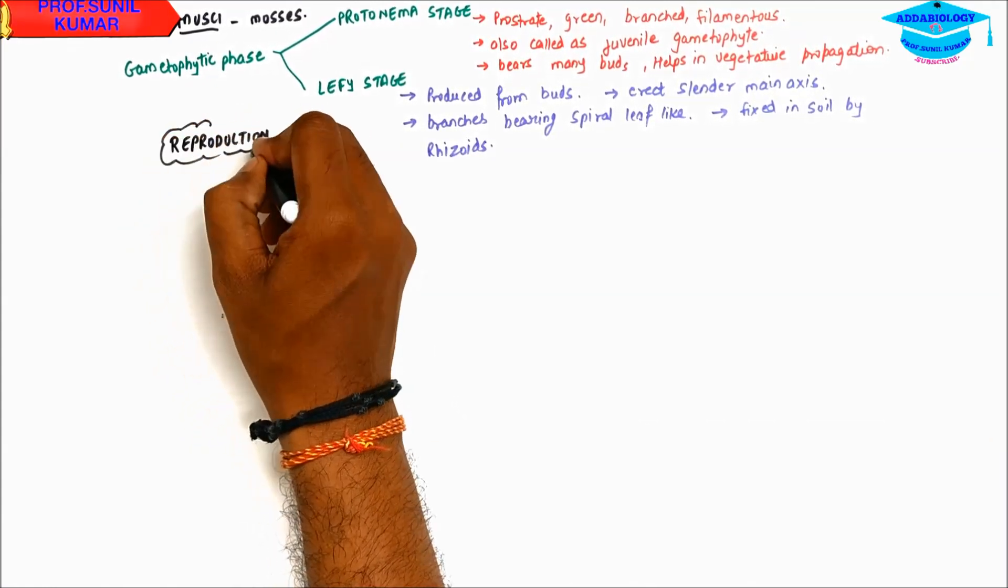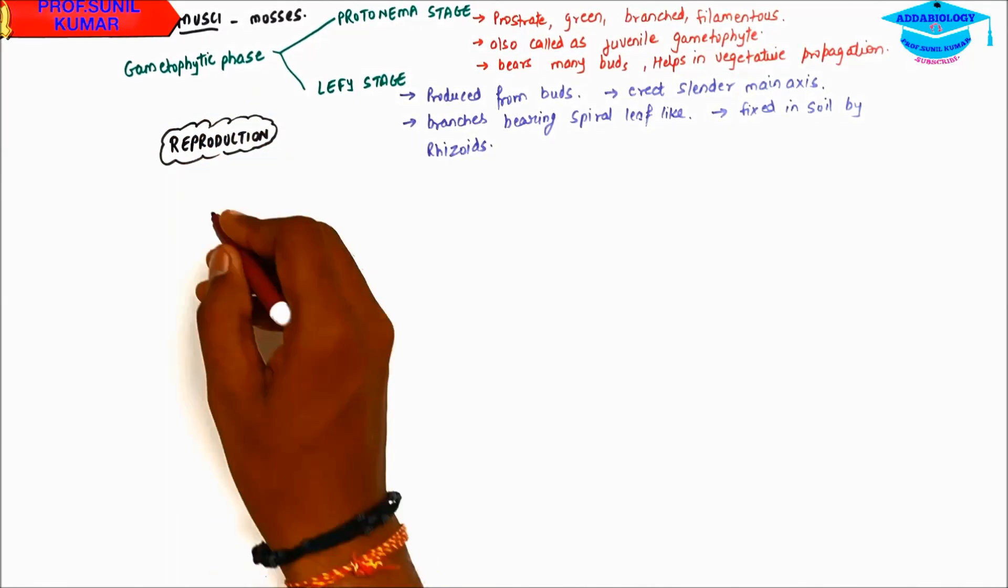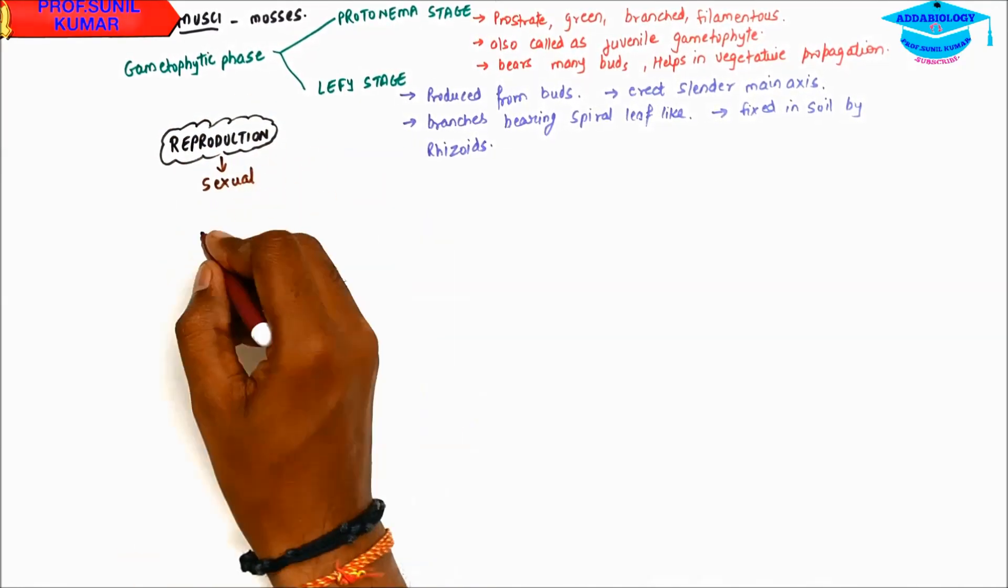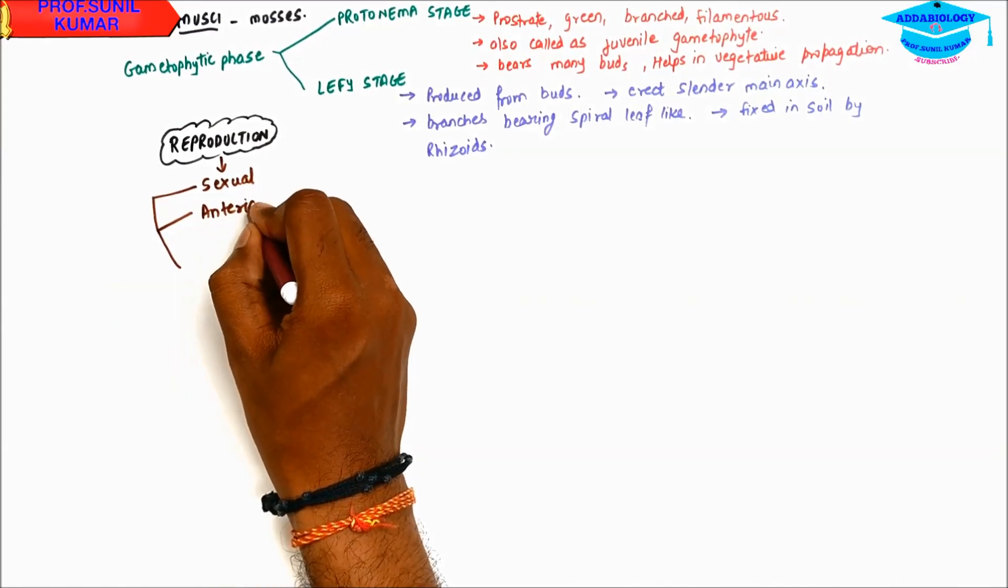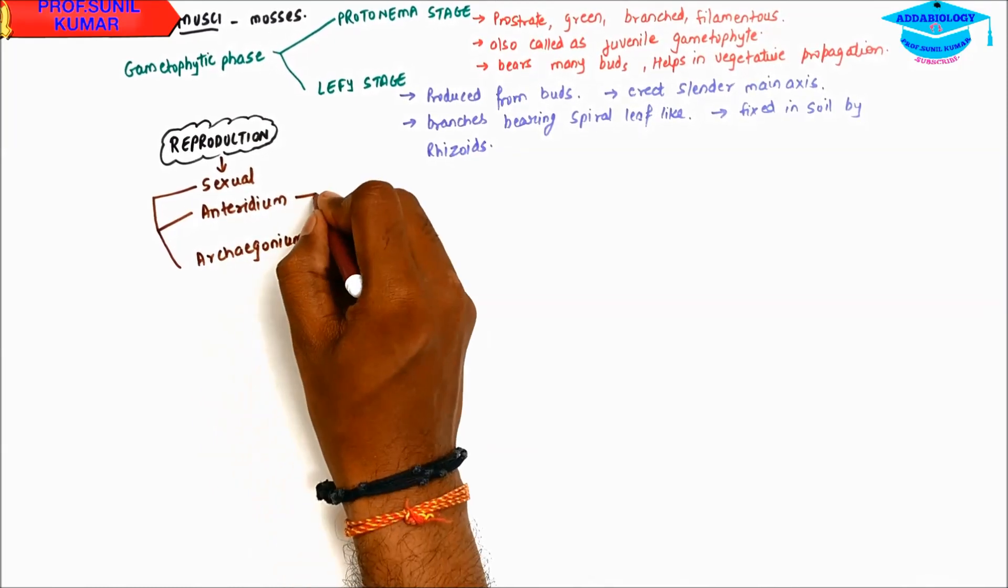When we talk about reproduction in Musci or moss, they reproduce again by sexual method. So it has antheridium. There is a spelling mistake. It is antheridium, A-N-T-H-E-R-I-D-I-U-M, and archegonium.